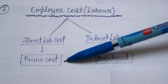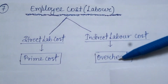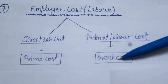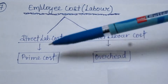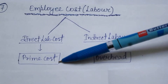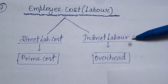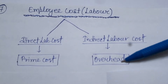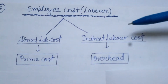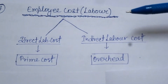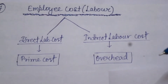Direct Labor Cost जो होती है वो Prime Cost का पार्ट होती है, और Indirect Labor Cost Overhead का पार्ट होती है. आज जो हम Chapter करेंगे वो है Direct Labor Cost. और जब हमको Indirect Labor Cost पढ़ना होगा, तो हम Overhead Chapter में पढ़ेंगे उसको — तब हमको पता चलेगा कि Indirect Labor Cost क्या होती है.